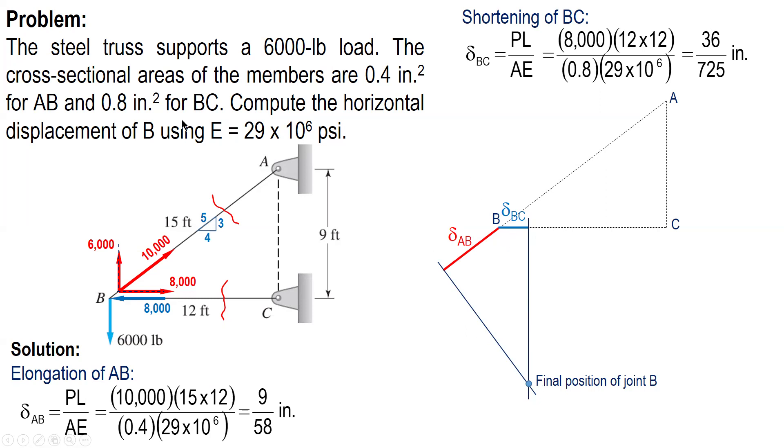Therefore, the horizontal displacement of B is this one. If you describe the location of the final position, this is the horizontal displacement. This one is also the vertical displacement. We have XB and this one is YB. But what is asked here is the horizontal displacement of B, XB. Therefore, the value of XB is simply equal to delta BC. So this is the answer of this problem.